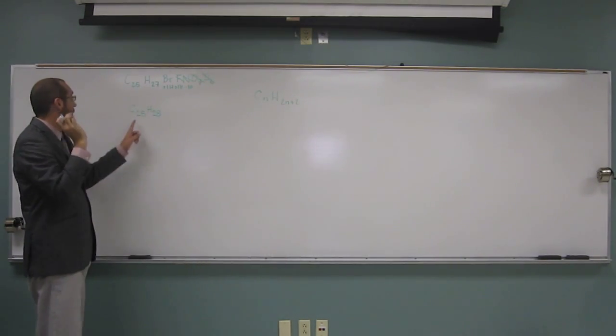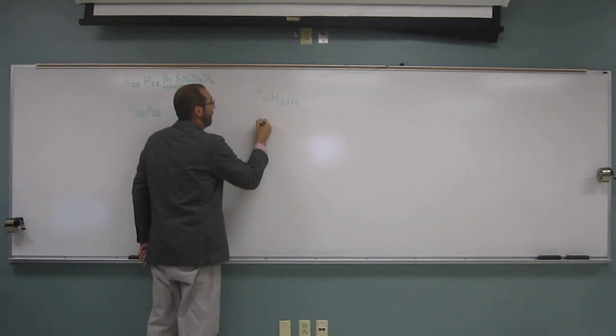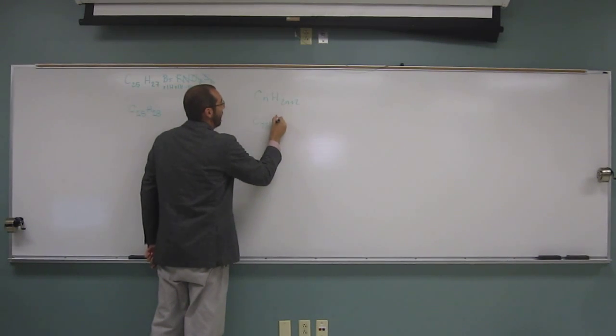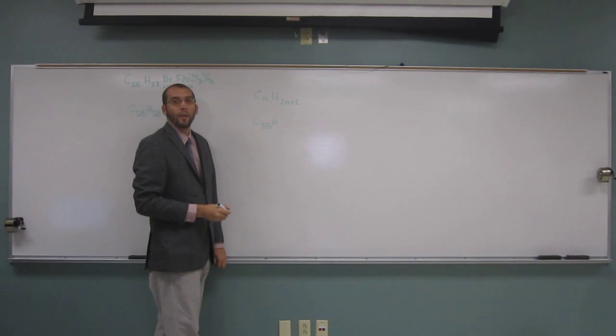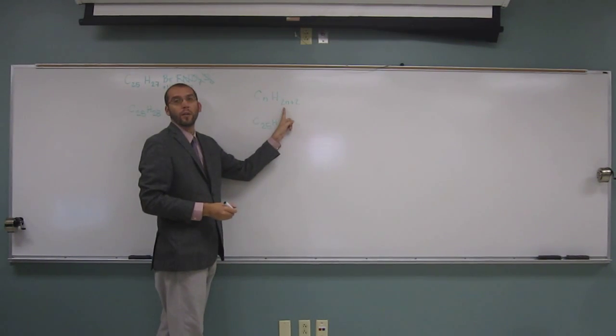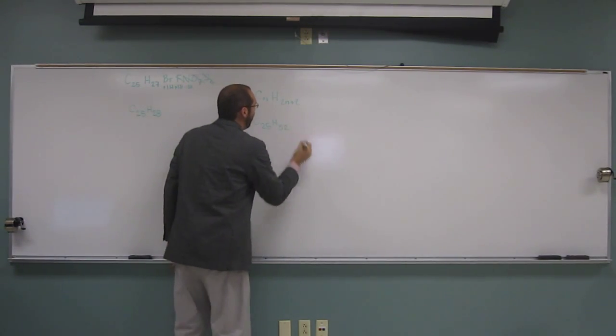So we have N is 25, so we've got to go over here. C25H, what is that going to be? 25 times 2, 50 plus 2, 52. H52, like that.